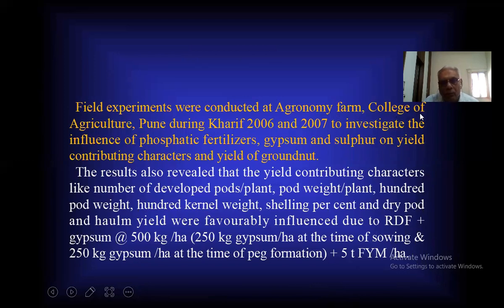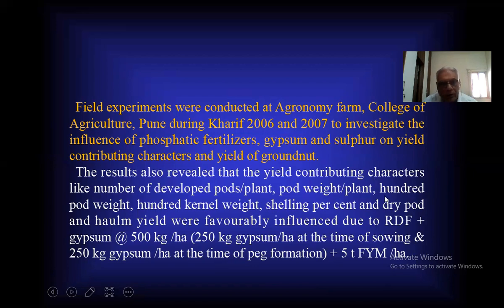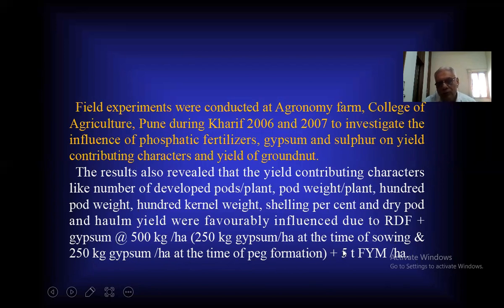A field experiment conducted at the Agronomy Farm at Pune during Kharif 2006 and 2007 investigated the influence of phosphatic fertilizer, gypsum, and sulfur on yield-contributing characters and yield of groundnut. The results revealed that yield-contributing characters like number of developed pods per plant, pod weight per plant, 100-pod weight, 100-kernel weight, shelling percentage, and dry pod and haulm yield were favorably influenced by the recommended dose of fertilizer plus gypsum at 500 kg per hectare — 250 kg gypsum per hectare at sowing and 250 kg gypsum per hectare at peg formation — plus 5 metric tons of farm yard manure per hectare.